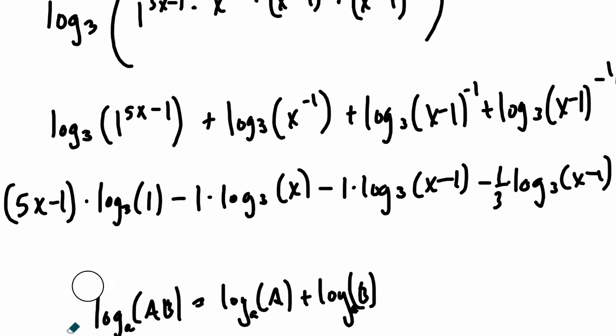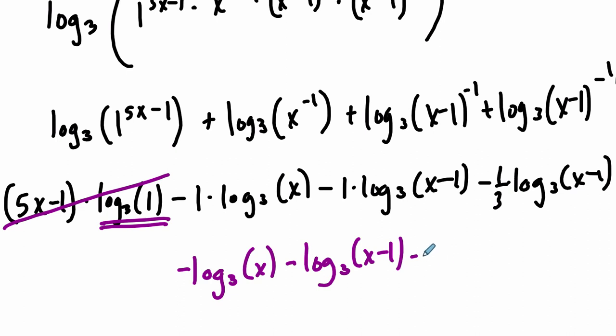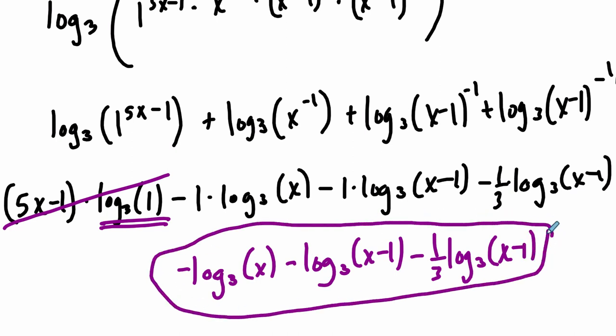So now I'm going to clear this off down here, we don't need it. Okay, now what? Well this right here, one of the keys, let me just underline this, term by term, let's break this down. This is 0, right? 3 to the base of 3, to what power is 1? Well that's 0, and 0 times 5x minus 1 is just 0. This essentially cancels out. What's left? Well in the next term, we have negative 1 times the log base 3 of x, it's just negative log base 3 of x. Then we have minus the log base 3 of x minus 1, and then minus 1 third the log base 3 of x minus 1. And we're done, this is it, right here. Alright, hope that helped.